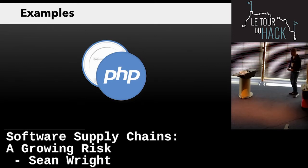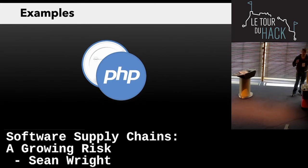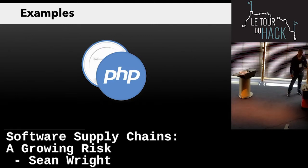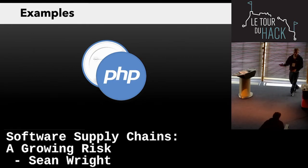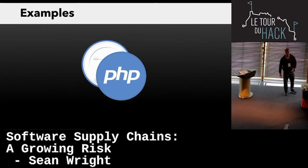Another example — thankfully this one didn't go anywhere, but it could have. PHP, which powers common things like WordPress, had attackers manage to do a malicious code commit to the official PHP repository. If that got out, you can imagine the impact that would have had. Thankfully that code commit was caught. PHP subsequently changed their whole approach, and that just shows you the potential for this.